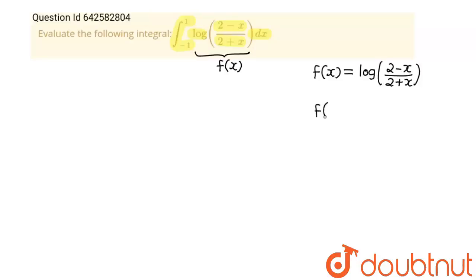Now I am going to find f(-x). So what we actually do, we place -x at place of x in RHS, this function. So this will be log[2-(-x)]/(2+(-x)), which becomes log[(2+x)/(2-x)].